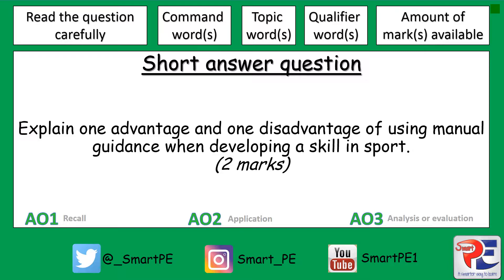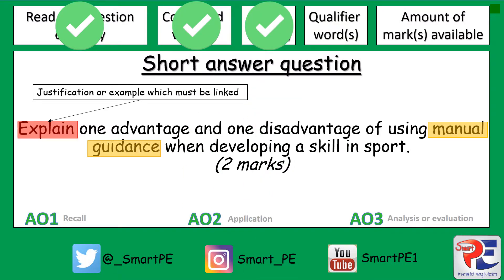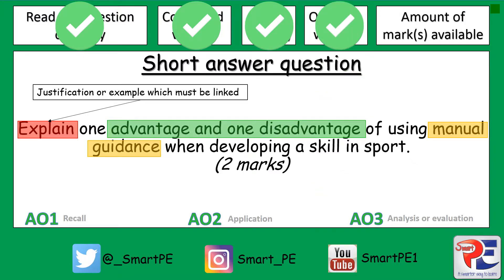As you can see, there are five steps at the top of the page that we always follow. First, read the question carefully. Second, highlight and fully understand the command word and what it means — so 'explain' means to give a justification or an example which must be linked. Then look for any topic words, then any qualifying words, and finally check the amount of marks available to make sure you make enough points in your answer.